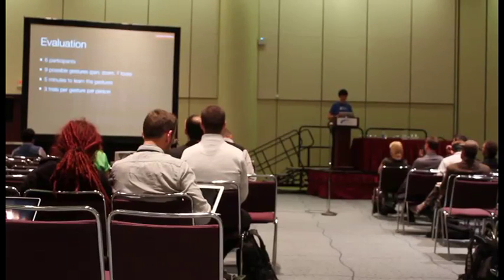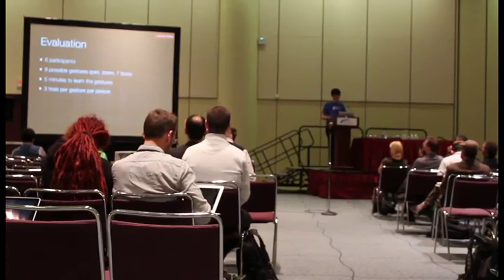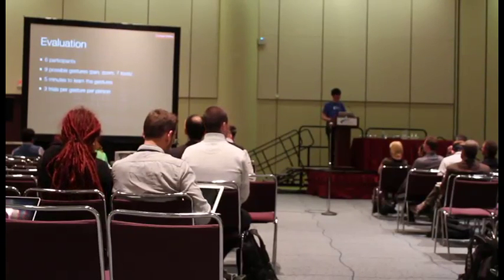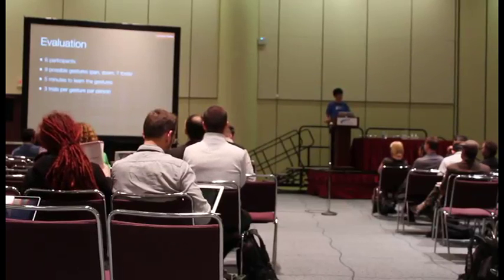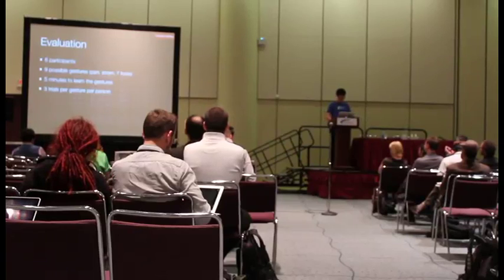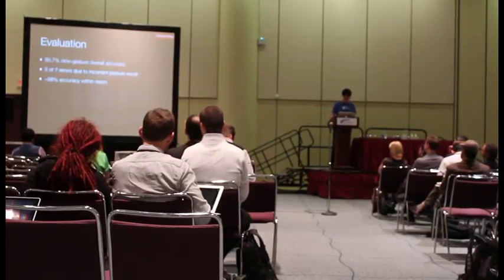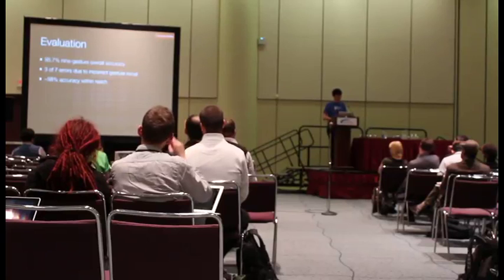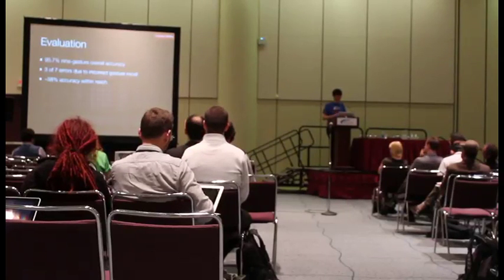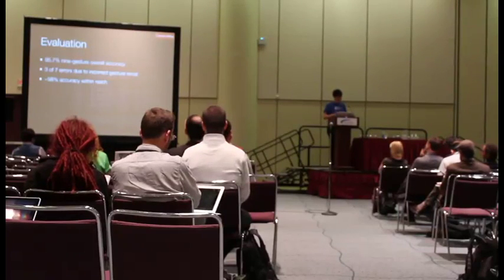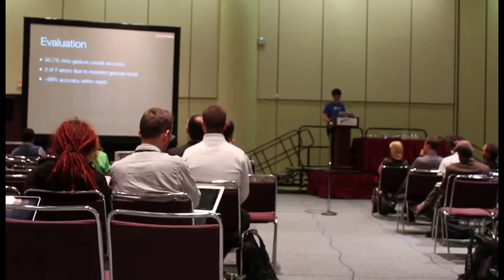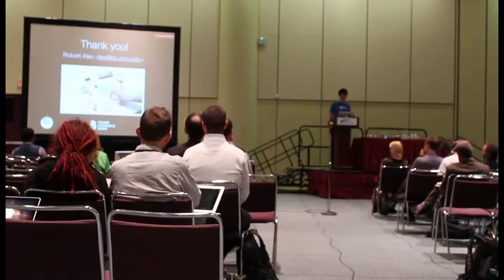Finally, we performed a quick evaluation to test the performance of the system. Participants were given a few minutes to familiarize themselves with the gesture set, then asked to replicate one of nine gestures — pan, zoom, and the seven tools — three times each in random order. Of the 162 trials, there were seven errors total, with an overall accuracy of 96%. We observed that three of those seven errors were due to the user actually performing the wrong tool grasp, rather than a misclassification. So we think that with a few more minutes with the system, users could easily achieve high 90s percent accuracy.